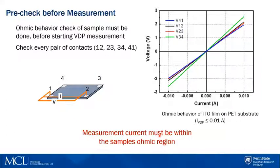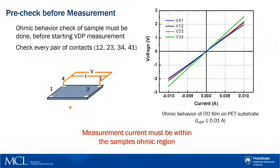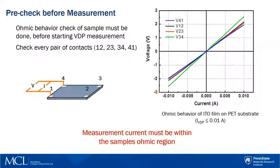Before the Van Der Pauw measurement, an ohmic contact check needs to be done first. The user will need to check every pair of contacts — like 1-2, 2-3, 3-4, 4-1 in the schematic — to see if they all show a linear relationship between applied current and measured voltage, like the IV graph shown here.